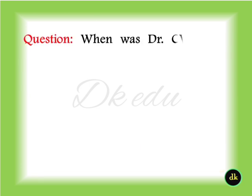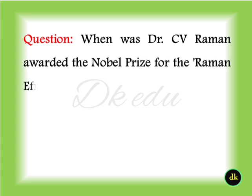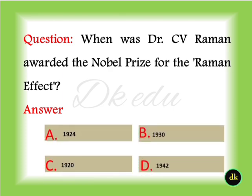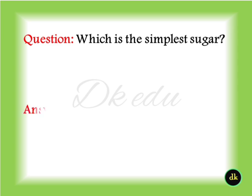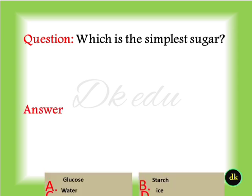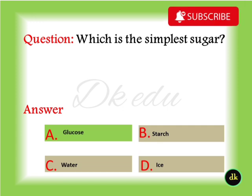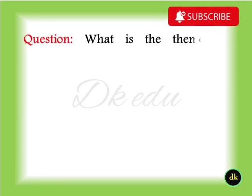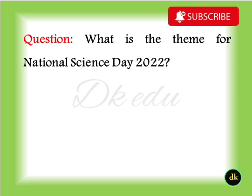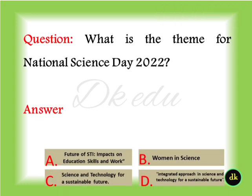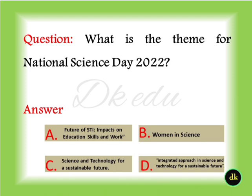When was Dr. Raman awarded the Nobel Prize for the Raman effect? 1930. Which is the simplest sugar? Glucose. What is the theme for National Science Day 2022? Integrated Approach in Science and Technology for a Sustainable Future.